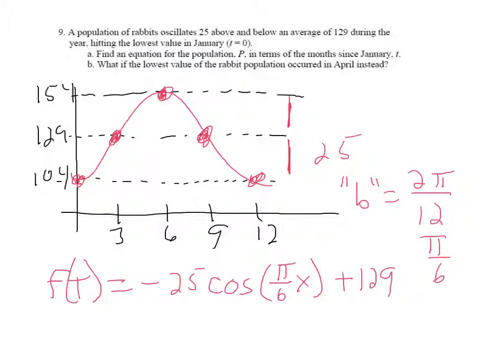The second part of this problem asks us, what happens if the lowest had happened in April? So that means, instead of being at January, it's going to shift over to 4, and then it just does the same thing. So what I'm seeing is shifted right 4 units. Everything else is exactly the same.